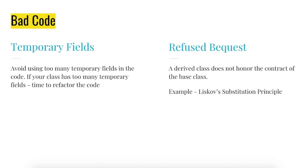If a derived class does not honor the contract of a base class, it tends to change the program behavior — this is called refused bequest. A better example would be Liskov's Substitution Principle. We must make sure that new derived classes are extending the base class without changing the behavior. If your code does this, then you have a code smell there.